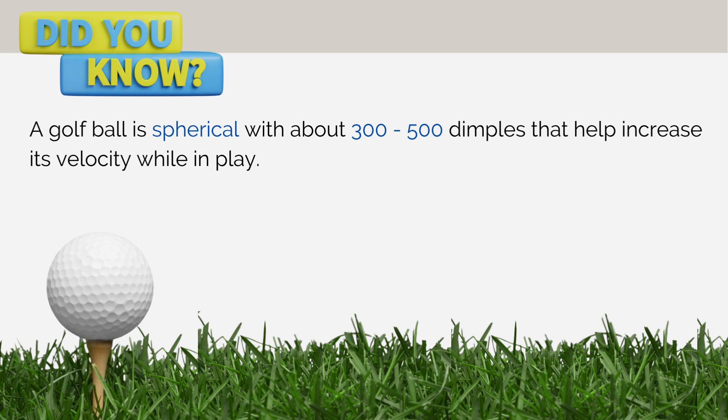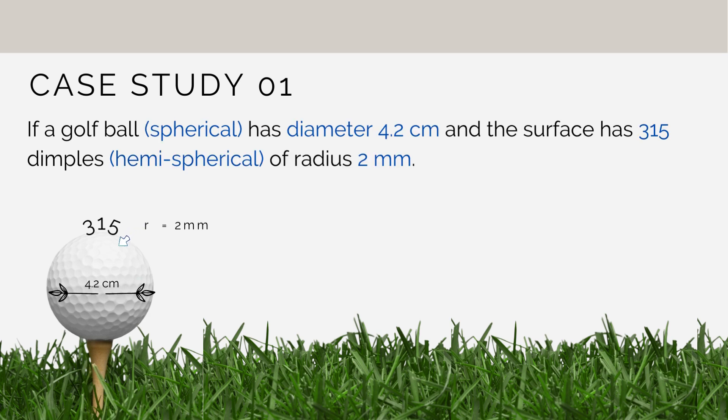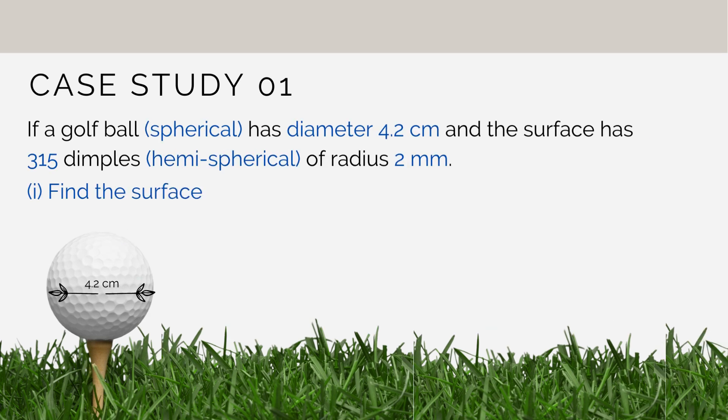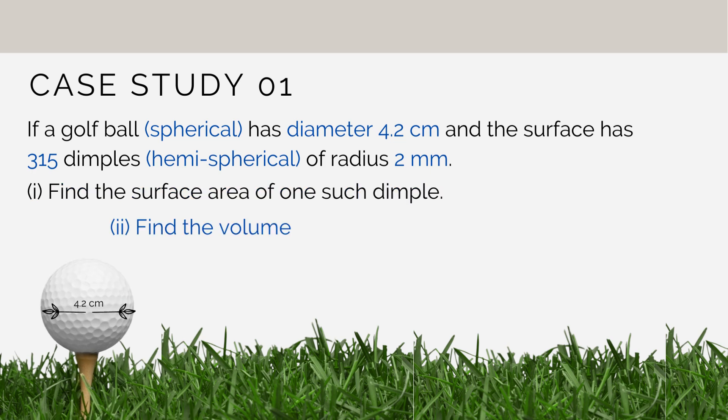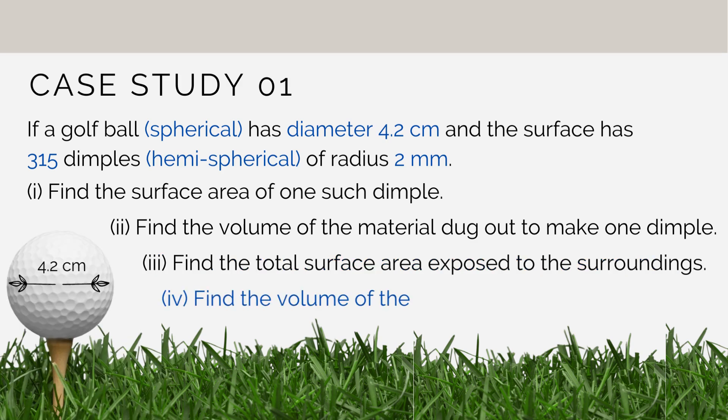It goes like this: If a golf ball has diameter 4.2 cm and the surface has 315 dimples of radius 2 mm, find the surface area of one such dimple, then find the volume of the material dugout to make one such dimple, then find the total surface area exposed to the surroundings, and lastly find the volume of the golf ball. Let's see the solution now.